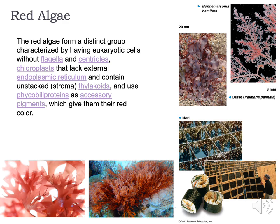Here are red algae, which in my opinion are the prettiest of the algae. They are red because of their pigments, like phycolipid proteins, which give them that red color. Included in these families is nori, the seaweed we use to make sushi. There are some slight differences in the cells that make them different from other algae and plants — they lack an endoplasmic reticulum, and their thylakoids are not stacked like they are in land plants.